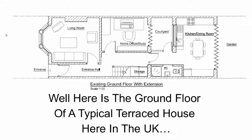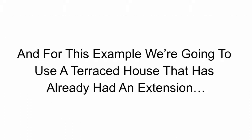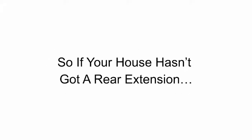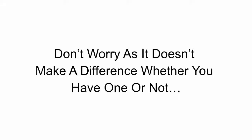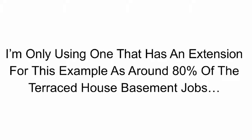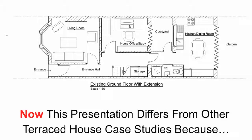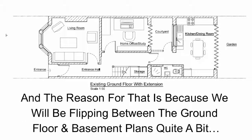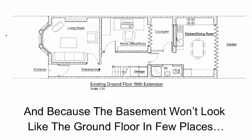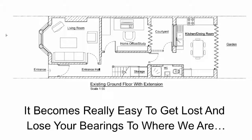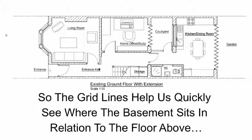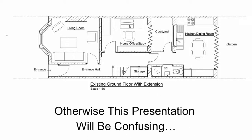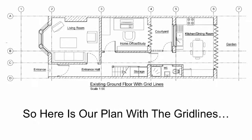Here is the ground floor of a typical terraced house in the UK. For this example we are using a terraced house that has already had an extension to the rear of the property. Whether the house has been extended or not doesn't matter for the basement layout — around 80% of the terraced house basement jobs I have worked on have had a rear extension. This presentation differs from other case studies because we are going to add grid lines to the slides. The basement won't look like the ground floor in a few places, so the grid lines help us quickly see where the basement sits in relation to the floor above. We have numbers 1 to 7 across the top and letters A to D along the side.